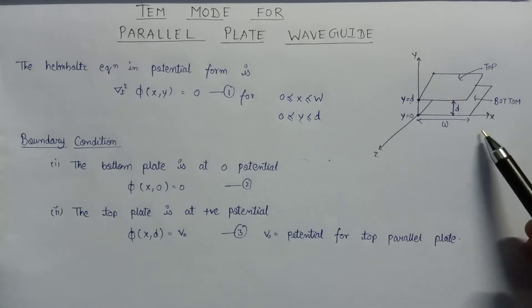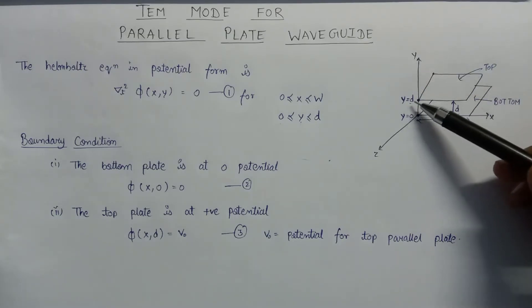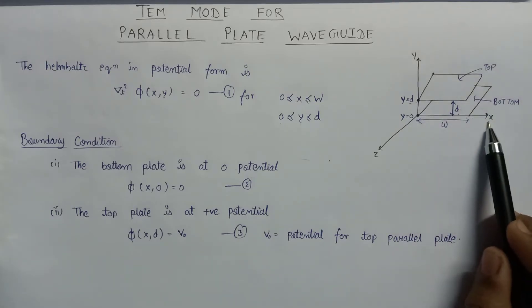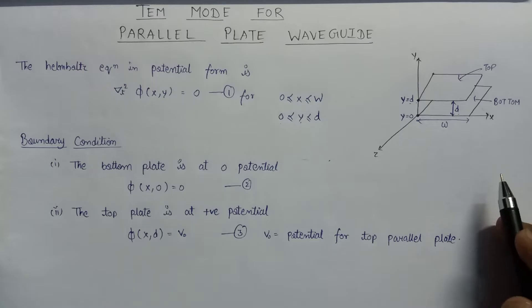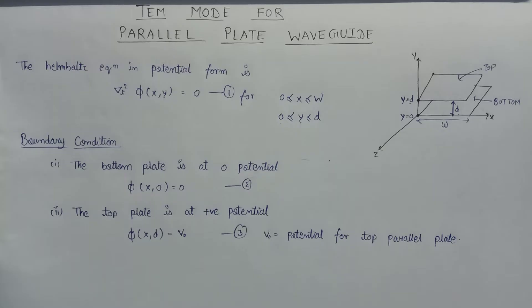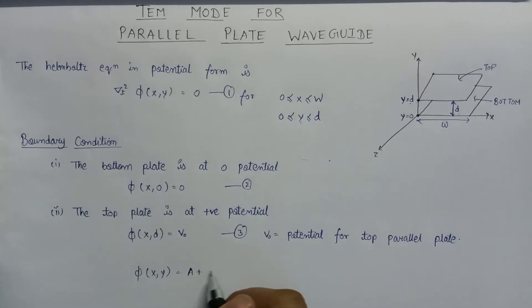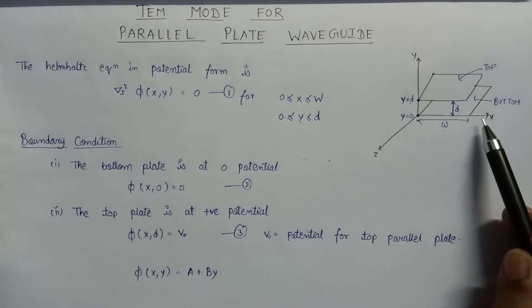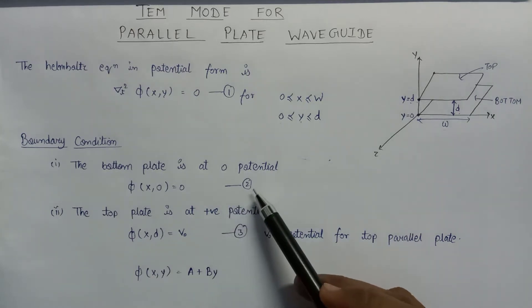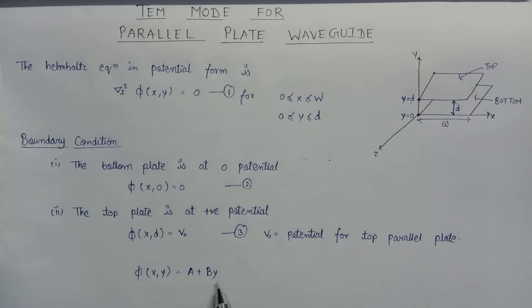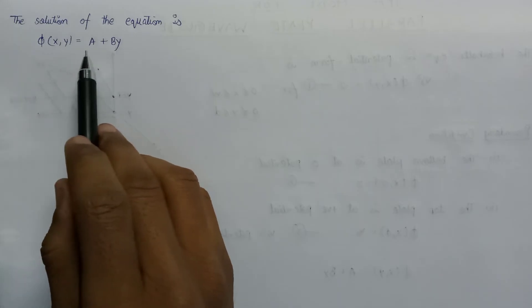One important thing to notice is that on the y-axis the value of y varies from 0 to D, but on the x-axis there is no variation. That's why if we write the general equation for the Helmholtz equation, phi(x, y) becomes A plus B·y. We have only included y which varies from 0 to D, and since x is constant, there is no x component.